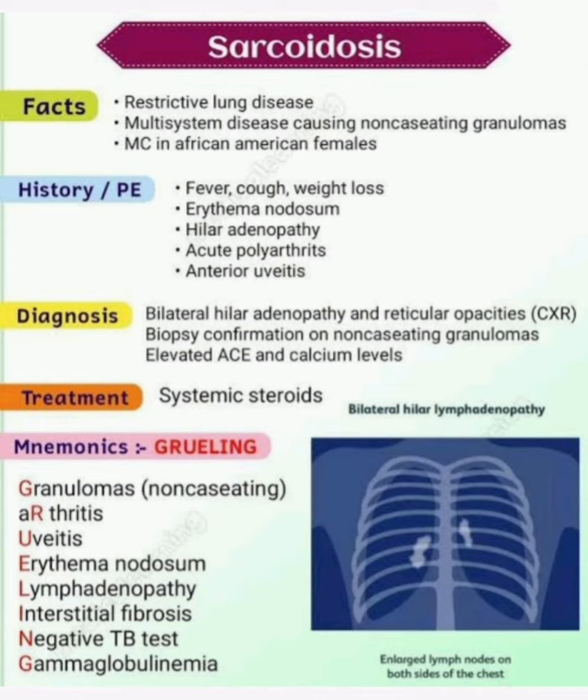Treatment is systemic steroids. Looking at the image on the right side, we are seeing on the chest X-ray bilateral hilar lymphadenopathy and enlarged lymph nodes on both sides of the chest.